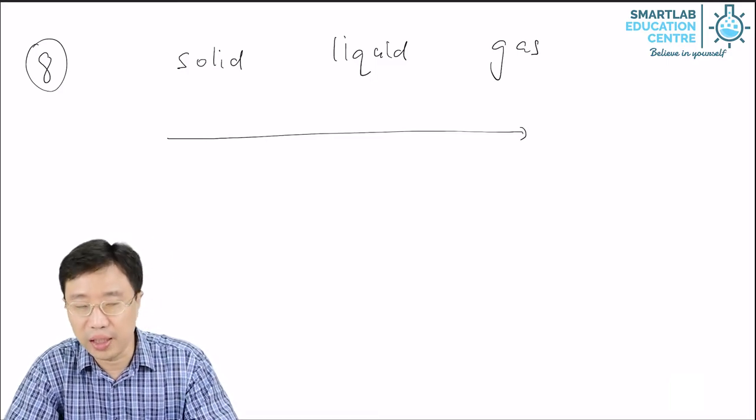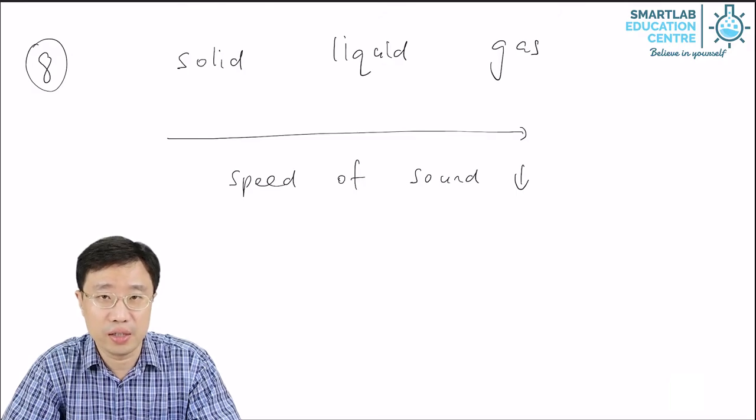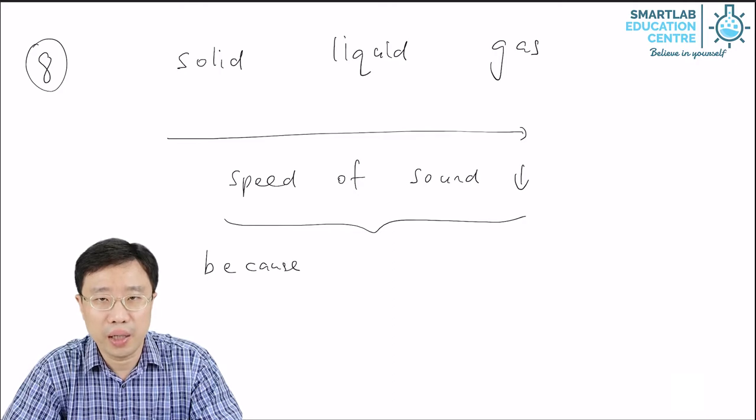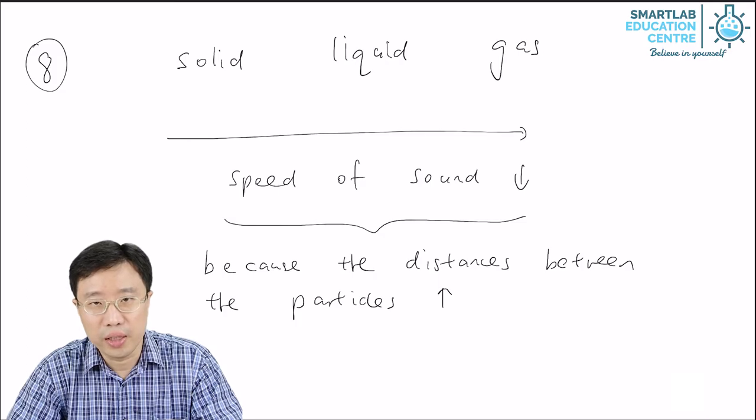So as you go from solid to gas, the speed of sound decreases. Why is that? That is because the distances between the particles increase as you go from solid to liquid to gas.